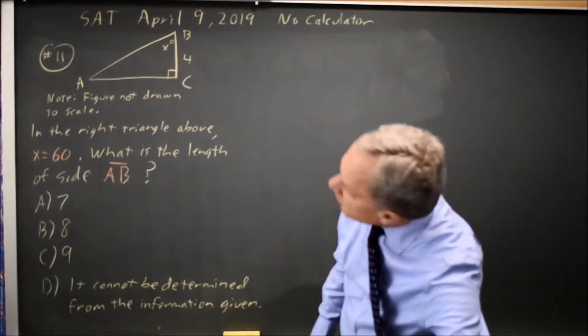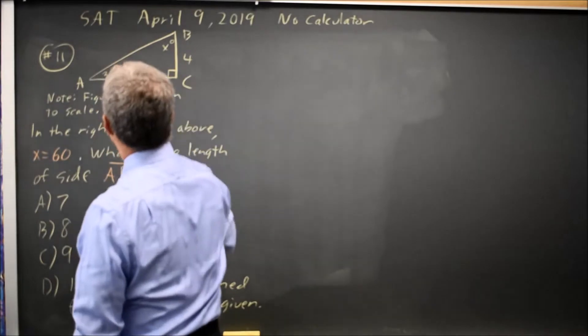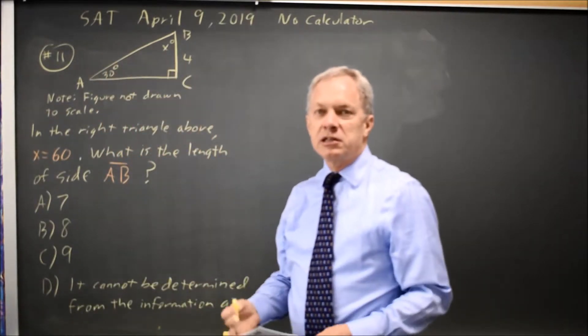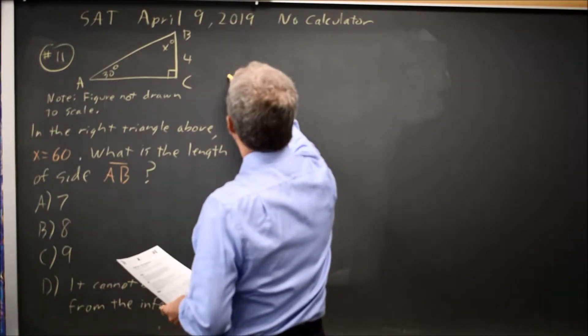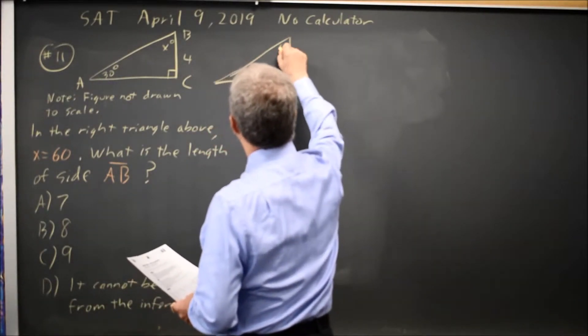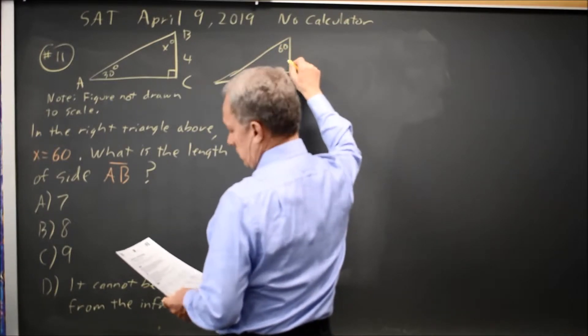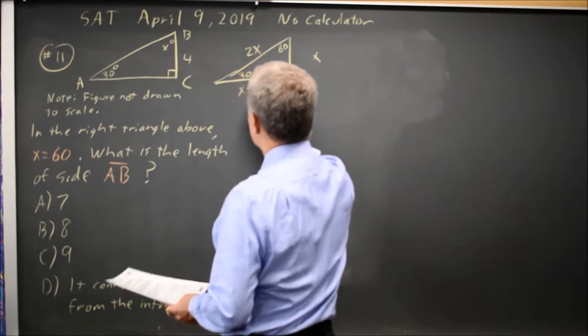When you have a 60-degree angle, that means this is 30 degrees and the 30-60-90 triangle is given in the formula sheet at the start of each math section with these ratios: x, 2x, and x root 3.